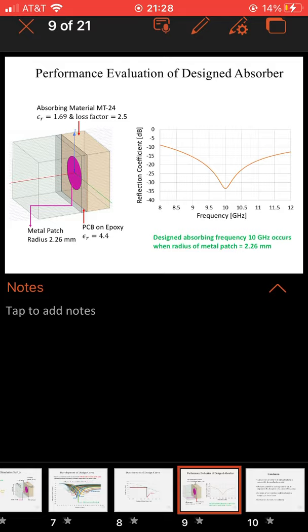Performance evaluation of the designed absorber: Since we found out that our metal patch radius needs to be 2.26, our absorber material MT24 has epsilon r of 1.69 and a loss factor of 1.622. And our PCB on epoxy epsilon r is 4.4. As you see in the graph, design absorption frequency of 10 gigahertz occurs when the radius of the metal patch is 2.26 millimeters as seen here with dB.